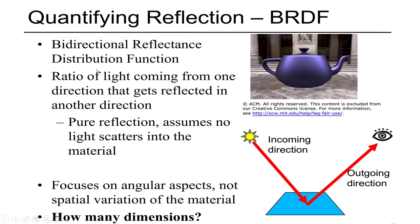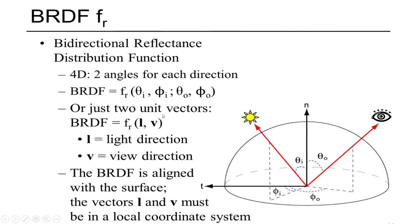Now we move on to BRDF, which stands for Bidirectional Reflectance Distribution Function. It is basically a ratio of incoming light and the view-directed reflected light — how much light is coming from the light source and how much is going towards the viewer. This function is known as the BRDF, and it can be expressed using four parameters or compressed into two unit vectors: the light-direction unit vector L and the view-direction unit vector V.